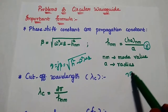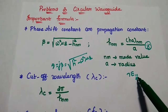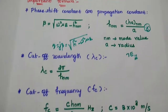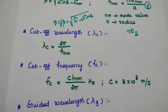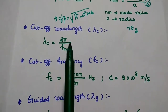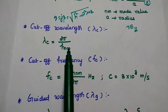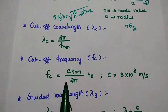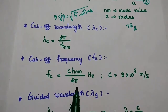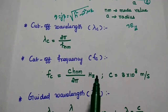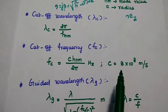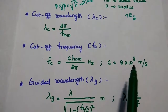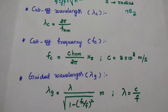For example, TE11 mode specifies the n and m values. The cutoff wavelength lambda_c is equal to 2·pi divided by h_nm. The cutoff frequency f_c is equal to c times h_nm divided by 2·pi in hertz, where c is the velocity of light, 3×10⁸ meters per second.